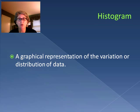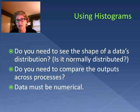When we use histograms, we try and decide: can we see the shape of a data's distribution? Is it normally distributed? Is there any kind of bias or skewness to it? Do we need to compare the outputs across processes? For example, do we need to take a look at one production line versus another and see whether they're roughly the same?